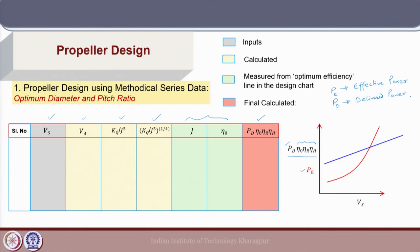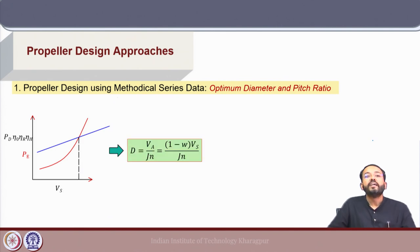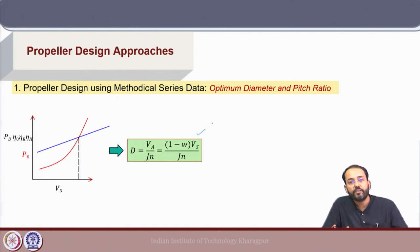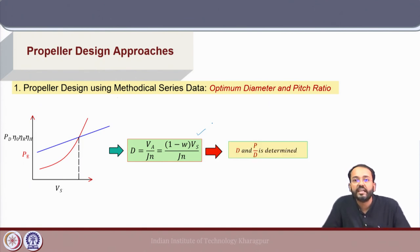In this design problem, the variation of effective power versus ship speed is given as the red line input. For each value of speed we perform this design calculation, obtaining the corresponding J and ηo, and compute Pd × ηo × ηr × ηh, represented by the blue line. The intersection of these two lines gives the design point. From that design point we calculate the propeller diameter, since diameter is an output of this design process, along with the pitch ratio P/D.